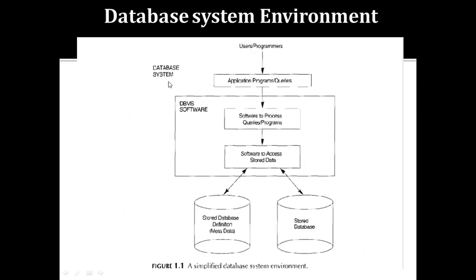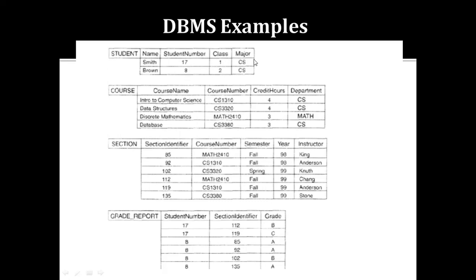We are the users. The database system shows: users play the application program and give a query to the DBMS software. The DBMS software processes that query or program and accesses results from the stored database. So this entire environment is the database system. A database management system is the collection of interrelated data along with the programs that access that particular data.